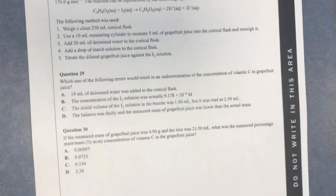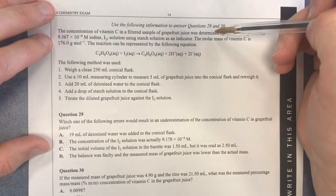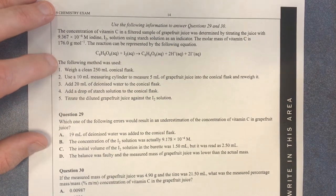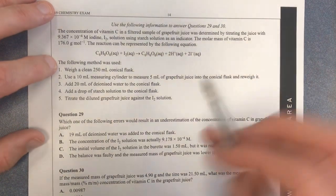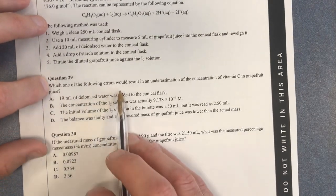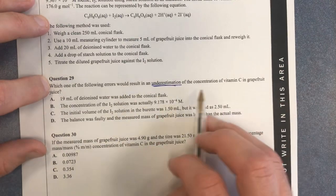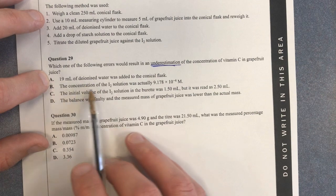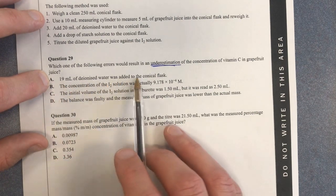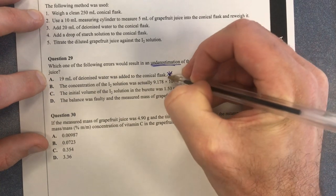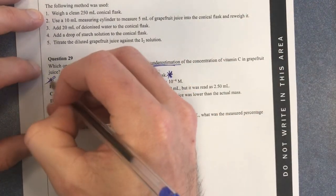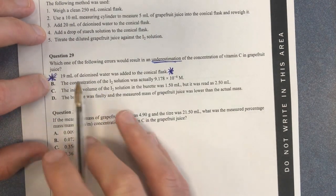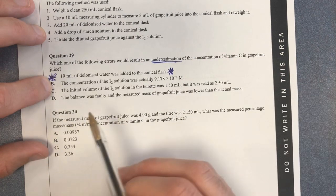Question 29: information about vitamin C titration. Which of the following errors would result in an underestimation of the concentration of vitamin C in grapefruit juice? Looking at option A — adding 19 mL of deionised water to the conical flask — this will not affect the result at all, because you're not measuring volume in the conical flask.